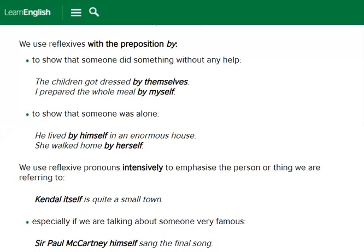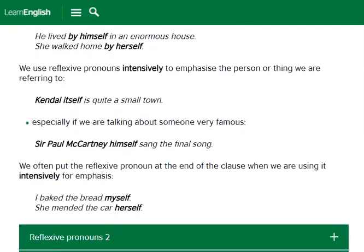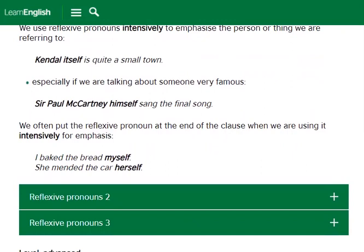We use reflexive pronouns intensively to emphasize the person or thing we are referring to. This way, the pronoun is called the emphatic pronoun. For example: 'Kendall itself is quite a small town' — we are emphasizing the town of Kendall. 'Sir Paul McCartney himself sang the final song.' We often put the reflexive pronoun at the end of the clause when using it intensively for emphasis. Below are two more exercises to check your understanding of reflexive and emphatic pronouns.